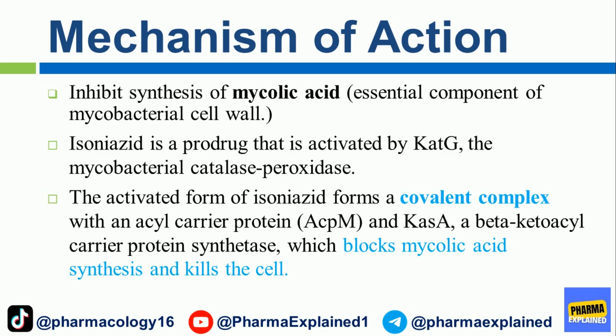Mechanism of Action: Isoniazid inhibits synthesis of mycolic acid, an essential component of the mycobacterial cell wall. Isoniazid is a pro-drug that is activated by KatG, the mycobacterial catalase peroxidase. The activated form of isoniazid forms a covalent complex with an acyl carrier protein (AcpM) and KasA, a beta-ketoacyl carrier protein synthetase, which blocks mycolic acid synthesis and kills the cell.